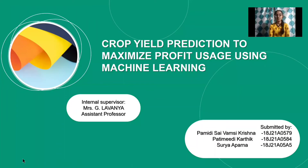Hello everyone. My name is Aparna and my teammates are Vamsi Krishna and Karthik. Our title is Crop Yield Prediction to Maximize Profit Usage Using Machine Learning.